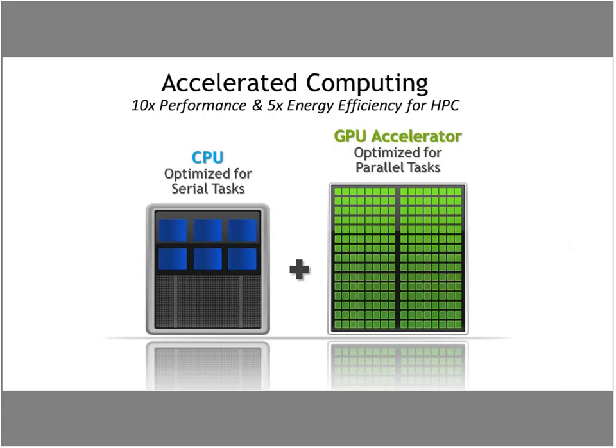Accelerated computing is really about using both the CPU and the GPU. On the left we have a cartoon of a traditional CPU with six cores representing perhaps six CPU cores. CPUs are really optimized for serial tasks — doing a sequence of operations in order, and doing that very quickly. GPUs are optimized for parallel tasks, and you can really see that in the hardware. CPUs have a small number of very fast cores; GPUs have a large number of relatively slower cores.